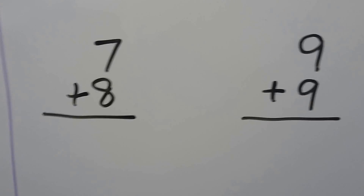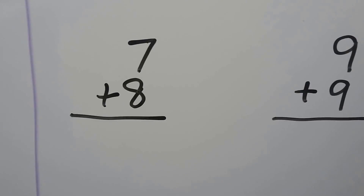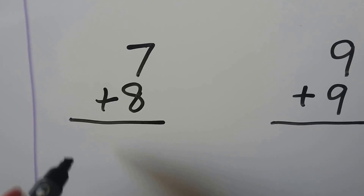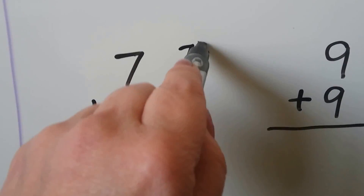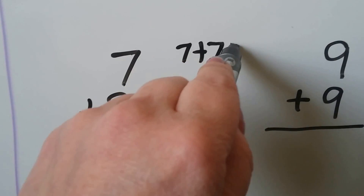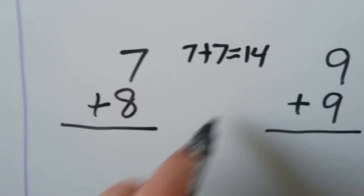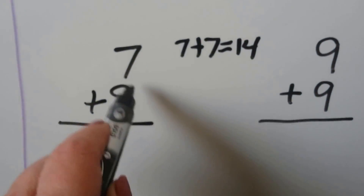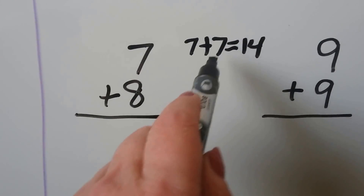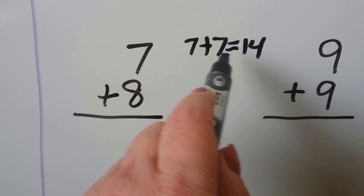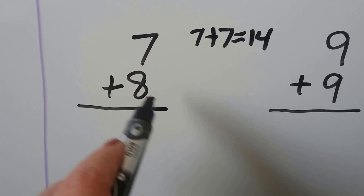7 plus 8. We can use doubles again. 7 plus 7 is equal to 14, and 8 is 1 more than 7, so we can do doubles plus 1. That's 15.